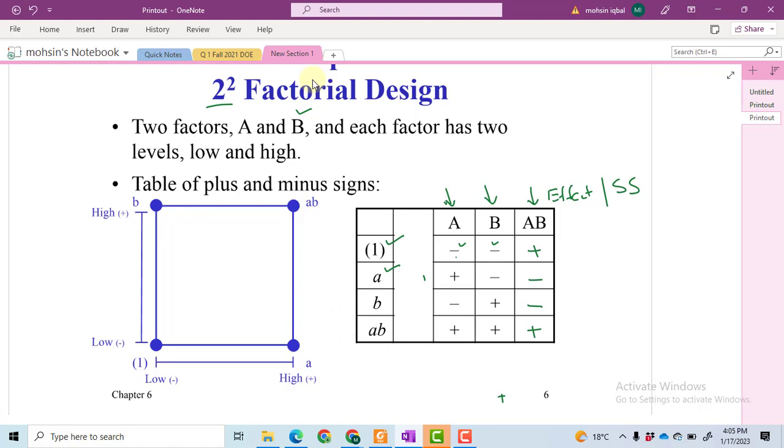We can also represent these two factors with two levels using a Cartesian coordinate graph. In this graph, we have factor A on the x-axis and factor B on the y-axis. Along the x-axis we have A at low level, then A at high level.